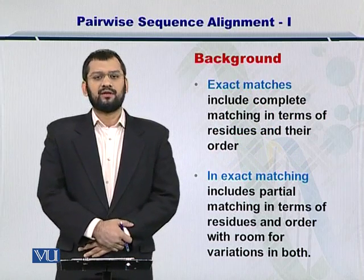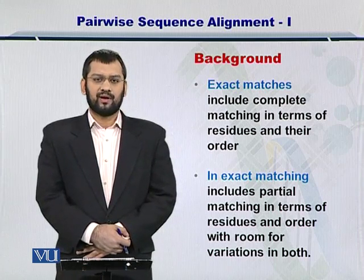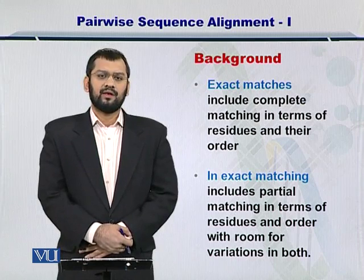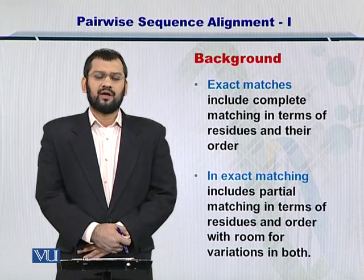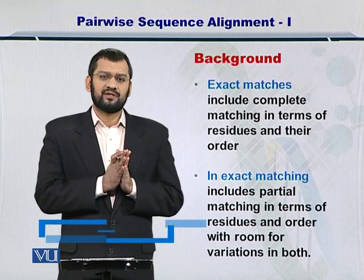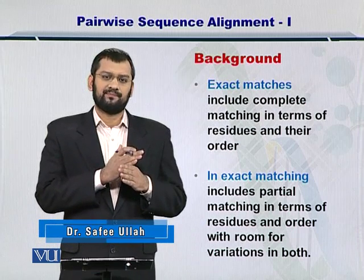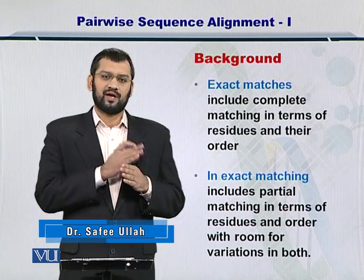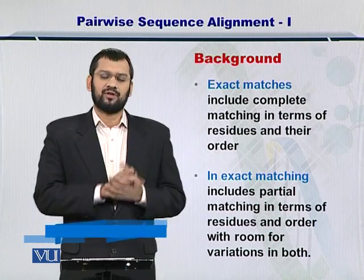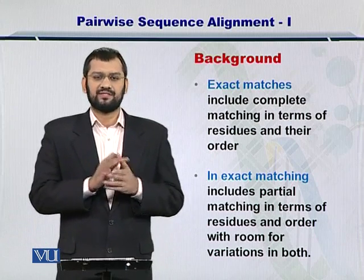You already know that there are two types of matches when you're trying to compare two biological sequences. Exact matches are when you have two sequences matching with each other amino acid by amino acid, or nucleotide by nucleotide, and they are in the exact same order. In this way you can obtain an exact match.